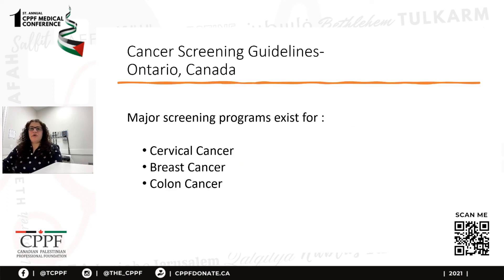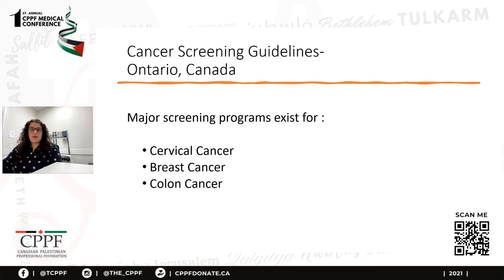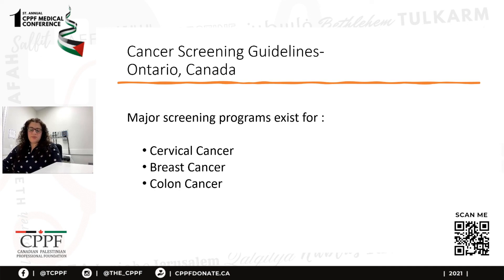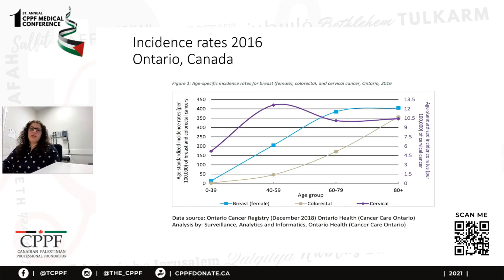In Ontario there are three major screening programs: cervical cancer, breast cancer, and colon cancer screening. The age-standardized incidence rate from 2016 for all cancers combined was 504 per 100,000 people. For breast cancer it was 129 new cases per 100,000 women; for colorectal cancer it was 52 per 100,000 people; and for cervical cancer it was 8.2 per 100,000 women. Except for cervical cancer, the incidence rate increases with age and was highest in people aged 80 and over.